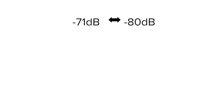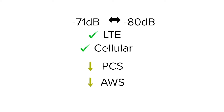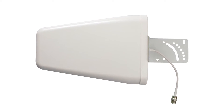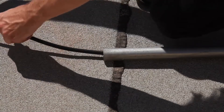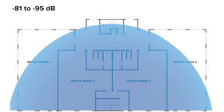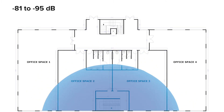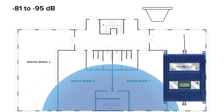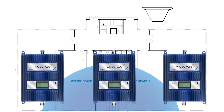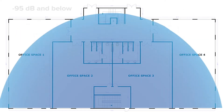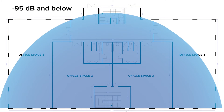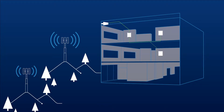Negative 71 to negative 80 dB is fine for LTE and cellular bands, but coverage for PCS and AWS bands begins to diminish. Consider using a higher gain donor antenna like a Yagi directional, and keep cable runs at a minimum to limit signal loss. Negative 81 to negative 95 dB means coverage for all bands decreases significantly — the amplifier may only support one broadcast antenna and cover less than 5,000 square feet. Consider adding more amplifiers or pinpointing which frequencies are most important. Negative 95 dB and below doesn't leave much signal to work with; a system will still work, but coverage areas will be dramatically impacted, and you'll need to experiment with booster placement.